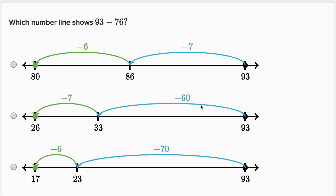Here we subtract 60, and then we subtract seven. But that's subtracting 67, not 76. We've got to subtract seven tens, seven tens,